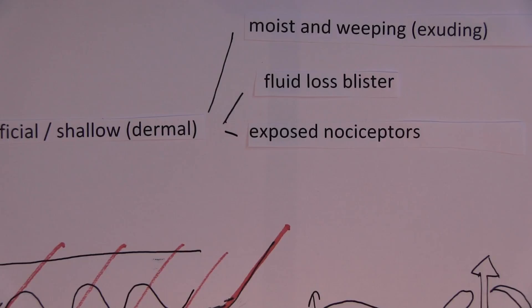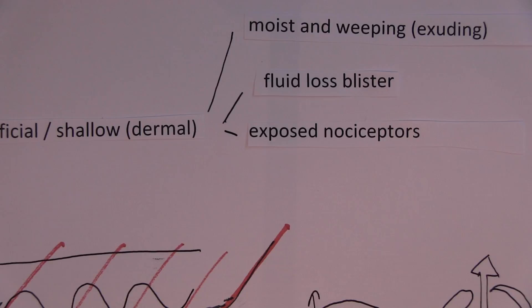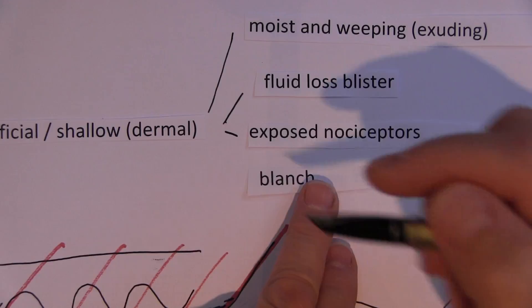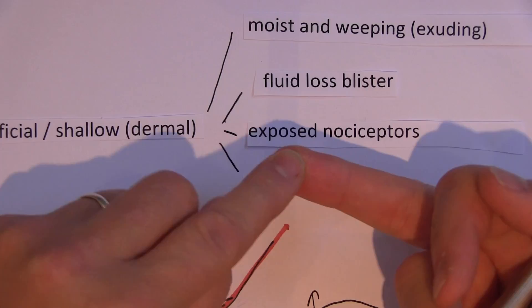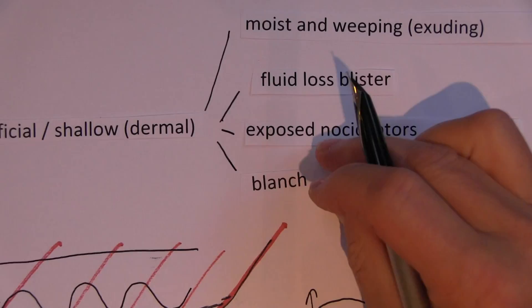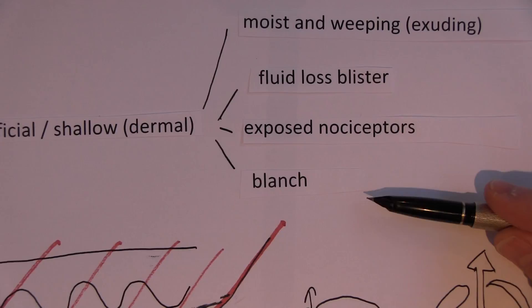And how do we know how deep the burn is? Well, one of the main ways is the amount of blanching. The amount that they'll blanch. So remember the blanching goes white. Capillary refill to fill it up again. Now, do you think you'll still get blanching in shallow dermal injuries?